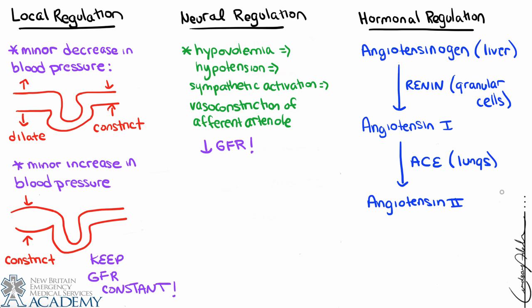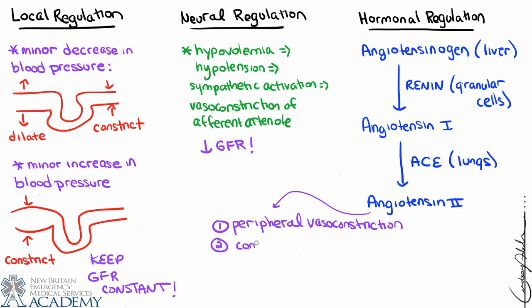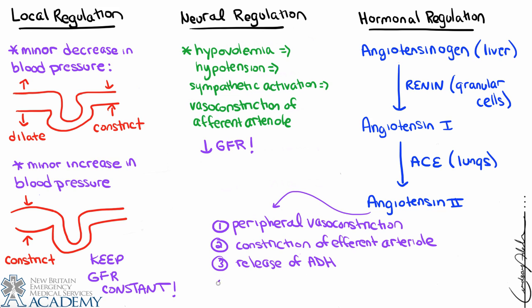This should be familiar because many patients take ACE inhibitors to prevent production of angiotensin 2. There are four important effects of angiotensin 2. Effect one is peripheral vasoconstriction, which can increase blood pressure in times of hypotension. Effect two is constriction of the efferent arteriole, which is purposeful to maintain GFR — constricting the efferent arteriole when blood flow is insufficient gives some hope of improving GFR.